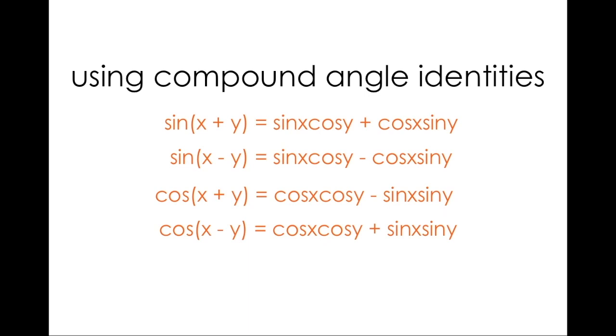Here's the facts. Compound angle identities allow us to determine the sine and cos of a sum or difference of two angles. Compound angle identities allow us to write exact expressions for non-special angles. And if there's one thing that's important in trigonometry, it's exact expressions.